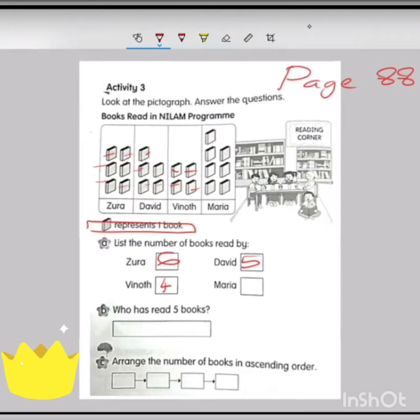Now look at question B. Who has read five books? Zora, Vinod, David, and Maria - who read five books? Yes, David. Then write down the answer here. David.